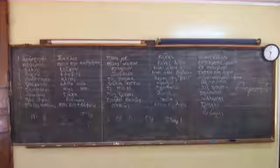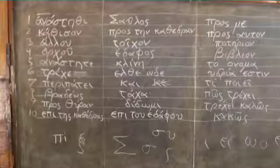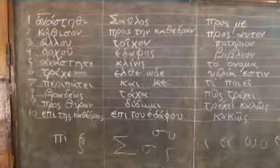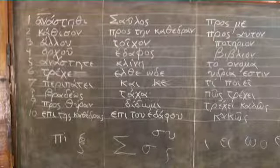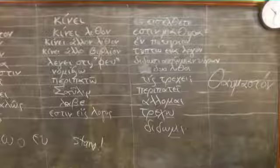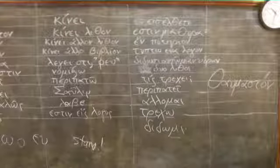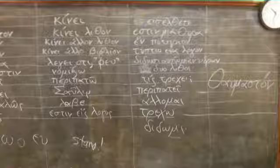Lesson 10 was a celebration of our progress and a check for weak spots. I read each word or phrase out loud, the students wrote down a translation of it, and we checked to see if it was correct immediately on each one.